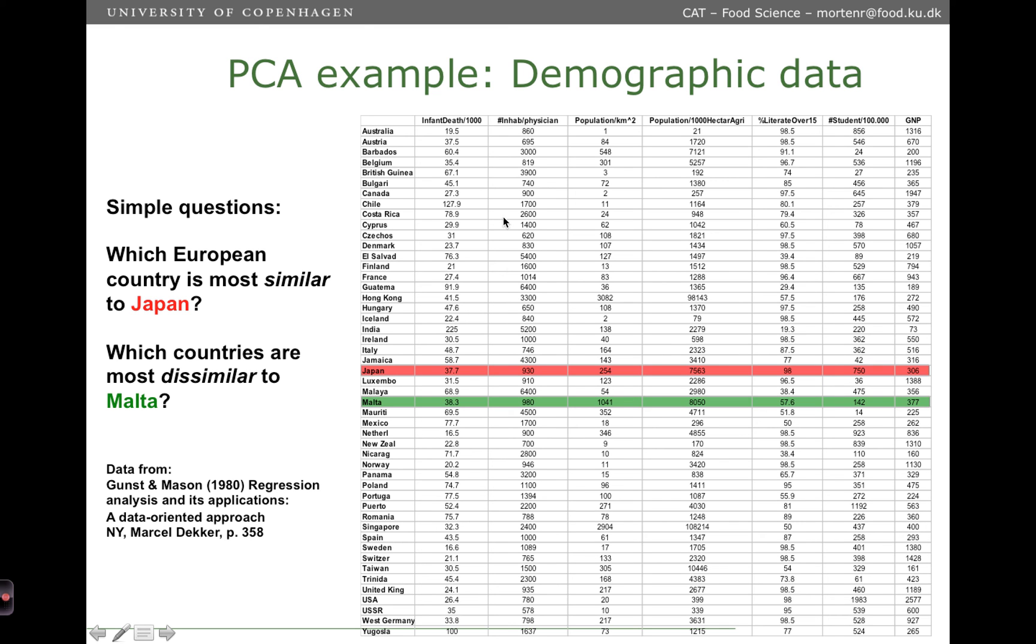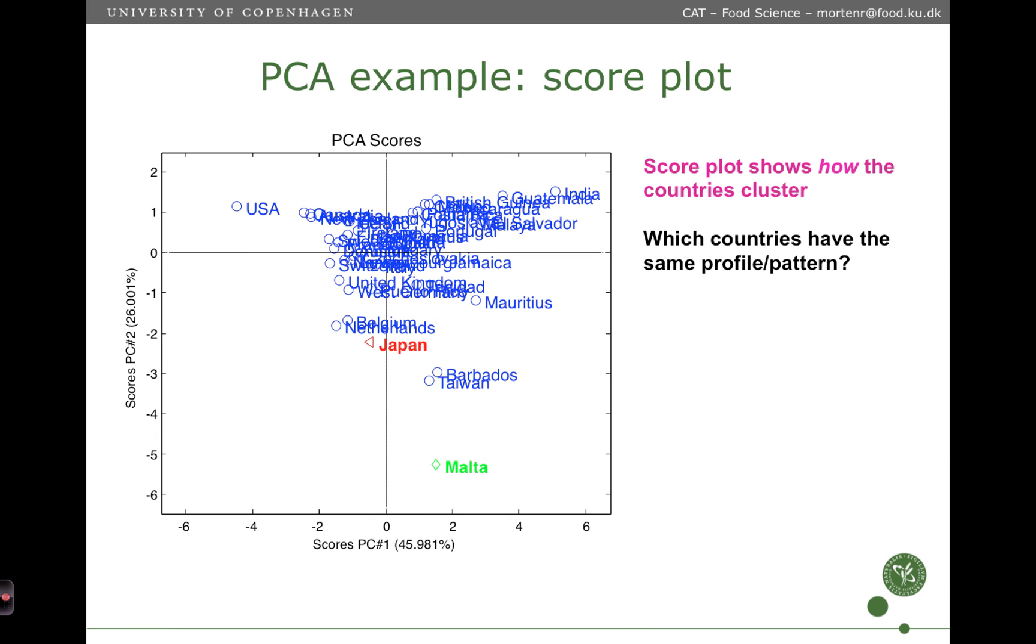So what is PCA? Well, PCA works on a data table and here is a data table of some countries. So there are different countries down here. And there are some descriptors for these countries. So you could ask some questions based on this table. For instance, which European country is most similar to Japan and Japan is highlighted here. And then we should just go out in the table and look for numbers which are similar to Japan. Well, that seems a bit hard. At least if you find the first one, Australia here, that seems to match on the first variable. Austria matches Japan on the first variable. But then on the second and especially the third variable, they are pretty much off. So that becomes a hard task. We could also ask the question, which countries are most dissimilar to Malta? And that becomes double hard because that is both countries which are different above or different below on these variables compared to Malta. Instead of interpreting the table, we make a PCA of this.